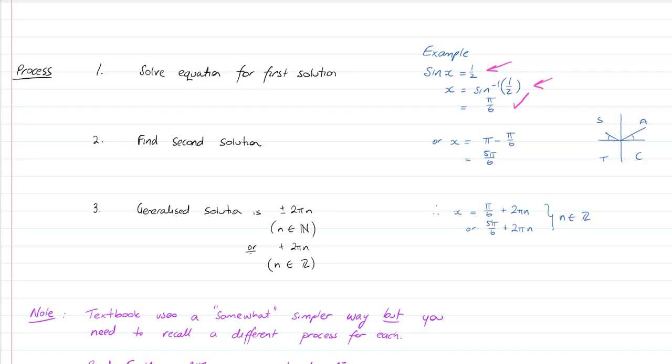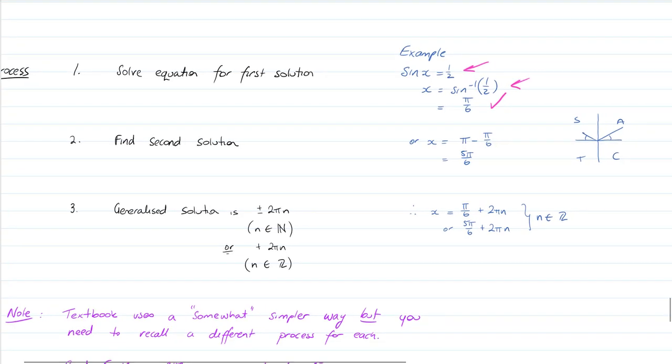Step 2, find the second solution. This is the other important stream. Quadrant 1, quadrant 2. π minus π/6 gives us 5π/6. There's our two solutions.